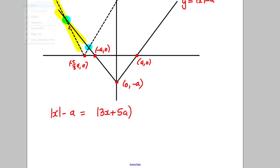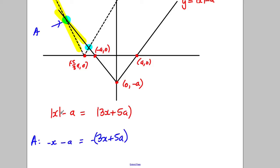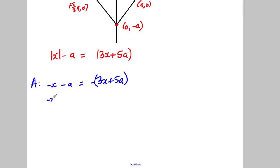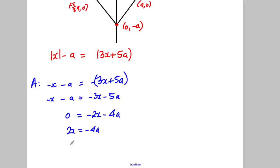For point A, we take the negative portions of both graphs. So we solve negative x subtract a equals negative 3x subtract 5a. Adding x and a to both sides: 0 equals negative 2x minus 4a, giving 2x equals negative 4a, so x equals negative 2a.